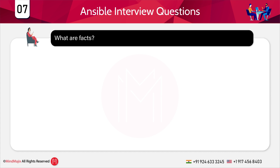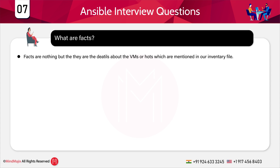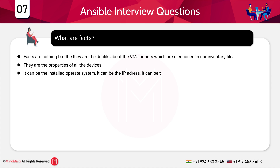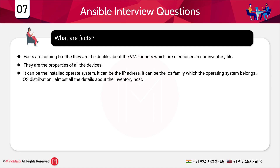What are facts? Facts are the details about the VMs or hosts mentioned in the inventory file — the properties of all the devices. This can include the installed operating system, IP address, OS family, OS distribution, and almost all details about your inventory hosts. If fact gathering is enabled, Ansible will gather facts as its first step when running a playbook. By default it always gathers facts unless you set gather_facts to false.